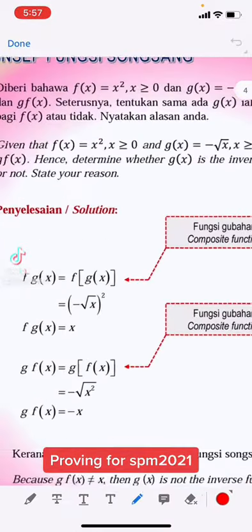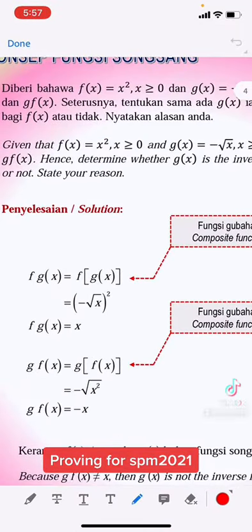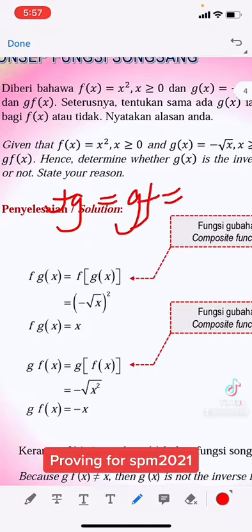If you want to prove two functions are inverse to each other, you have to find f(g(x)) and also g(f(x)). If it produces x, that means f is inverse to g.